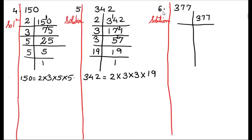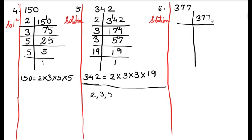So now we will solve question 6, that is 377. If we look at its units place, we can see that it has 7. Is 7 divisible by 2? No. Therefore 377 is also not divisible by 2. The prime numbers are 2, 3, 5, 7, 11, 13, 17 and so on. So this is not divisible by 2.